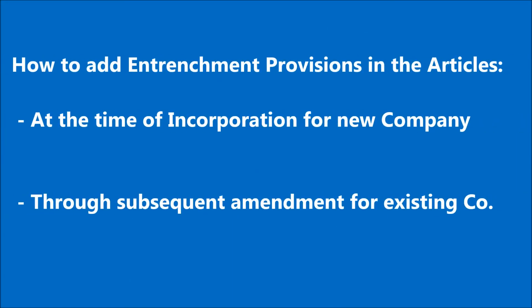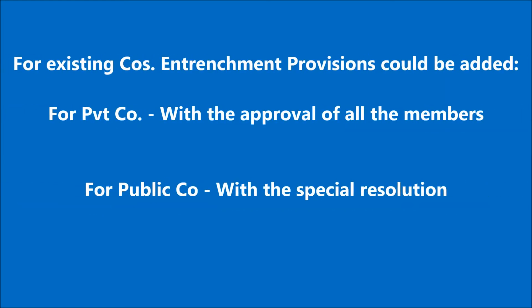How to add entrenchment provisions in the articles? As per Subsection 4 of Section 5 of the Act, entrenchment provisions can be added in the articles at the time of incorporation of new companies. For existing companies, entrenchment provisions can be added subsequently with an amendment in the articles. For any existing private company, entrenchment provisions could be added if agreed by all the members. For public companies, entrenchment provisions can be added if approved by a special resolution.